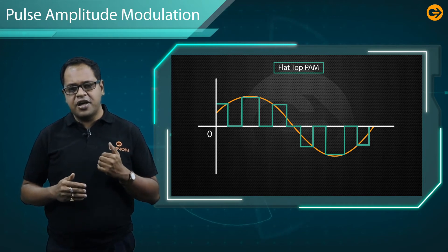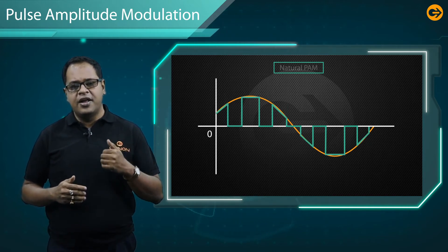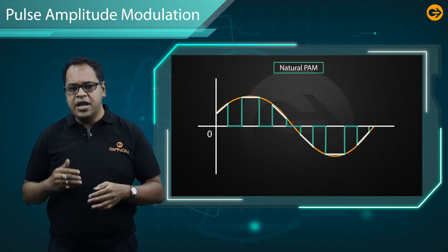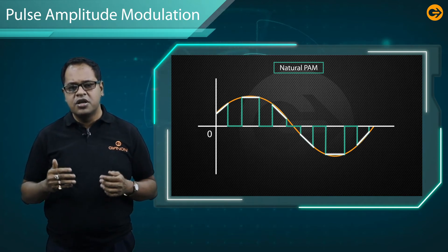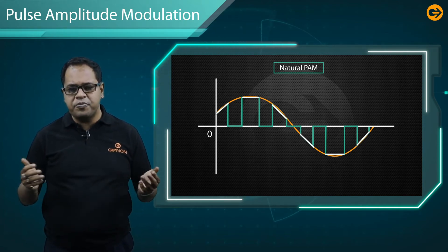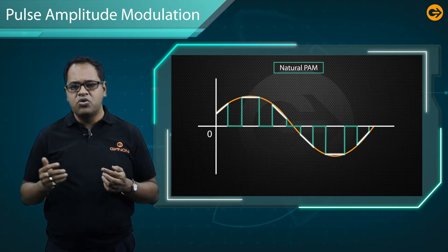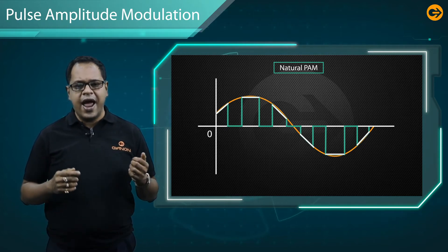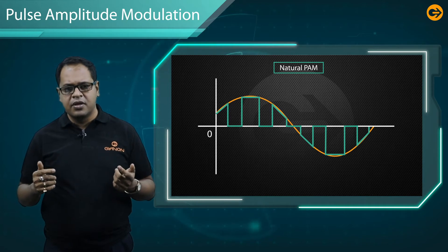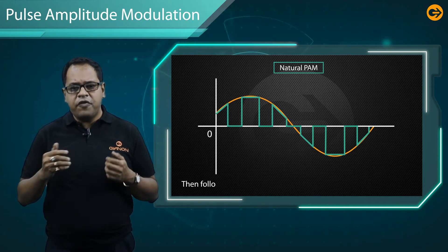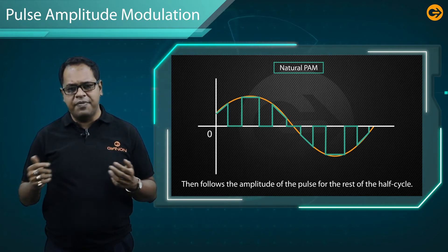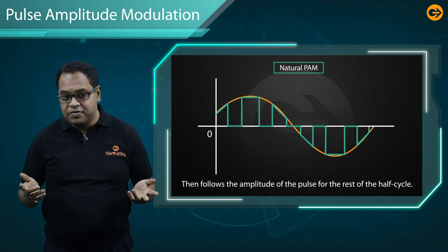The tops of the amplitude remain flat. In Natural Pulse Amplitude Modulation, the amplitude of each pulse is directly proportional to the modulating signal amplitude at the time of pulse occurrence, and then follows the amplitude of the pulse for the rest of the half cycle. So they are flexible.